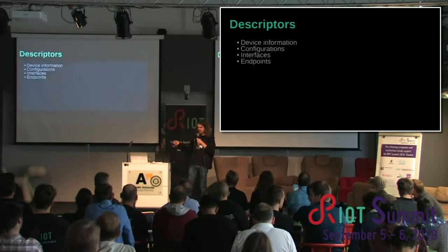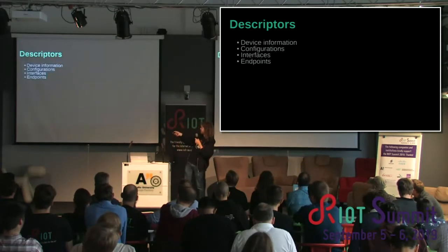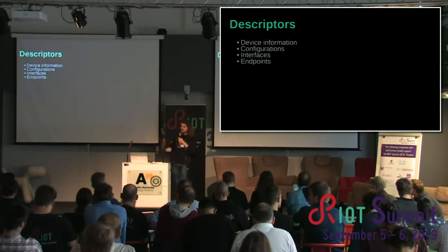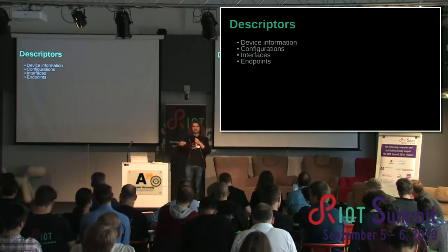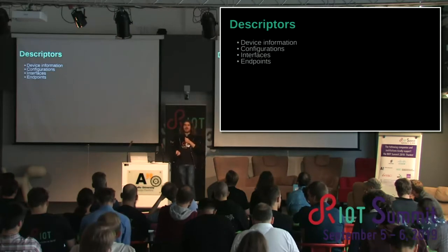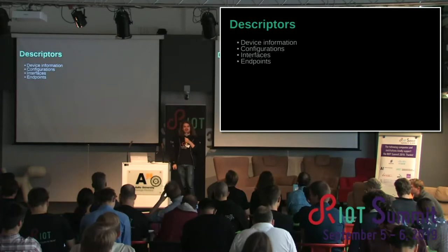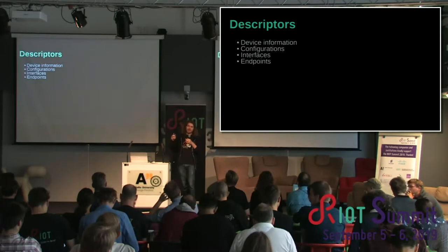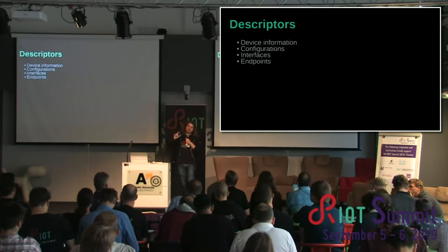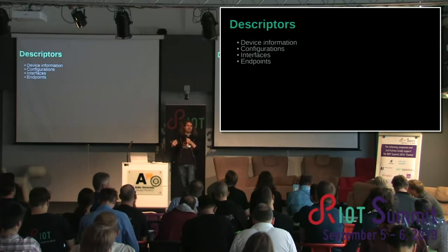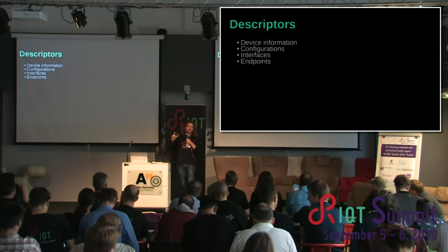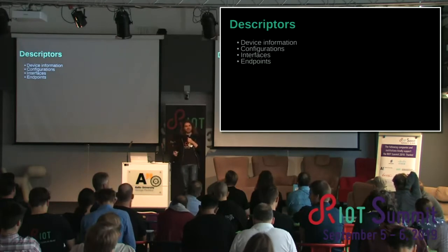Descriptors also include interface and endpoint information. A composite device — like a printer-scanner — can have multiple functions, so multiple interfaces. The best way to describe an interface is as a collection of endpoints. For a mouse, there's a single interface describing it as an HID device with one endpoint transmitting mouse button presses. For a USB serial converter, there's an interface with two endpoints — one for data to the device and one for data from the device.